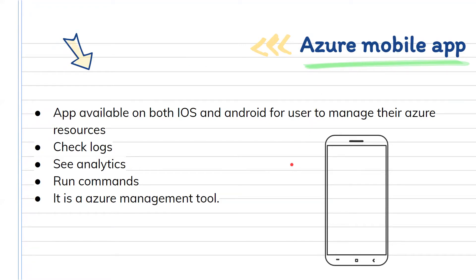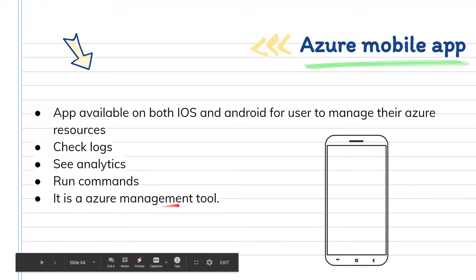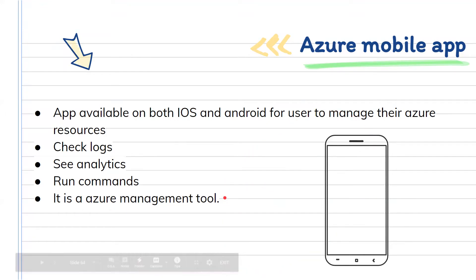We'll start with the Azure mobile application. Just like we manage YouTube, Instagram, or Facebook from our phones and see changes reflected on the website, Azure came up with the Azure mobile application. Users can manage their Azure account from mobile devices — checking logistics, analytics, traffic on virtual machines, stopping VMs, checking test results, storage amounts, and even running commands. It is available for both iOS and Android.